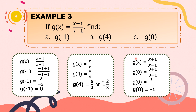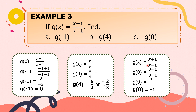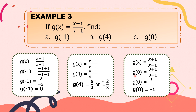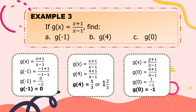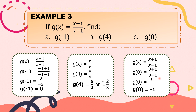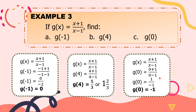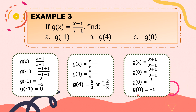For letter c, our x is 0. We replace all x with 0. g of x becomes g of 0. x plus 1 becomes 0 plus 1; x minus 1 becomes 0 minus 1. 0 plus 1 is 1; 0 minus 1 is negative 1. 1 over negative 1, or 1 divided by negative 1, is equal to negative 1. Thus, g of 0 is equal to negative 1.